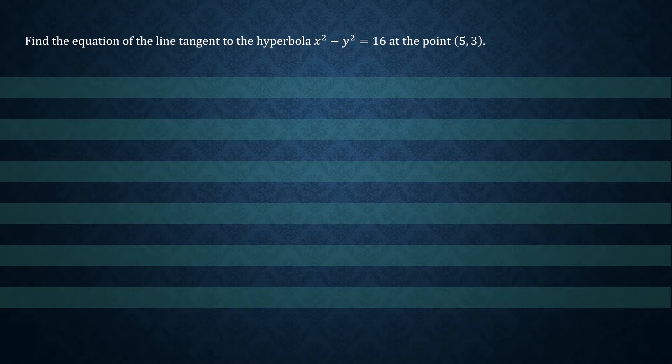To do this, we'll do some implicit differentiation. So let's write down our hyperbola equation, which is x squared minus y squared equals 16.